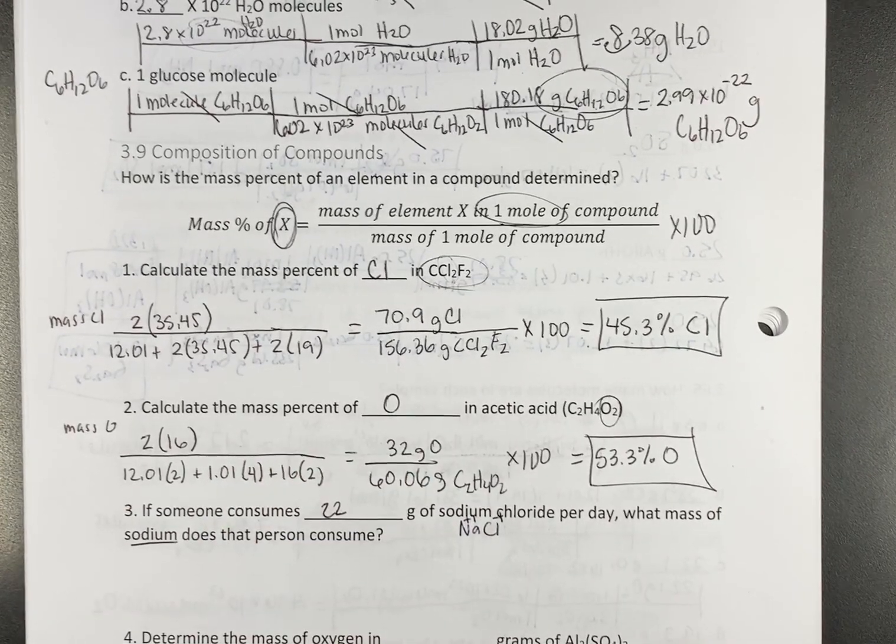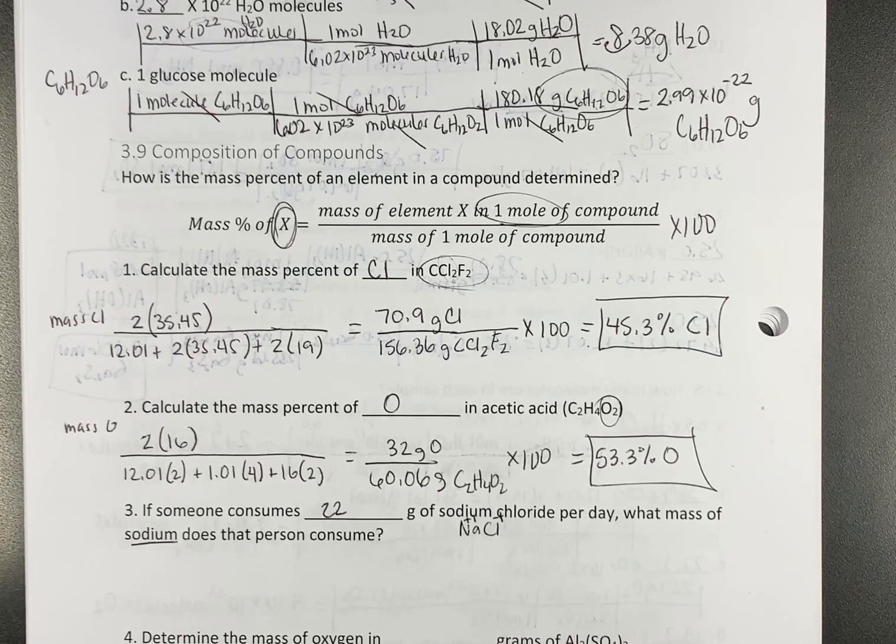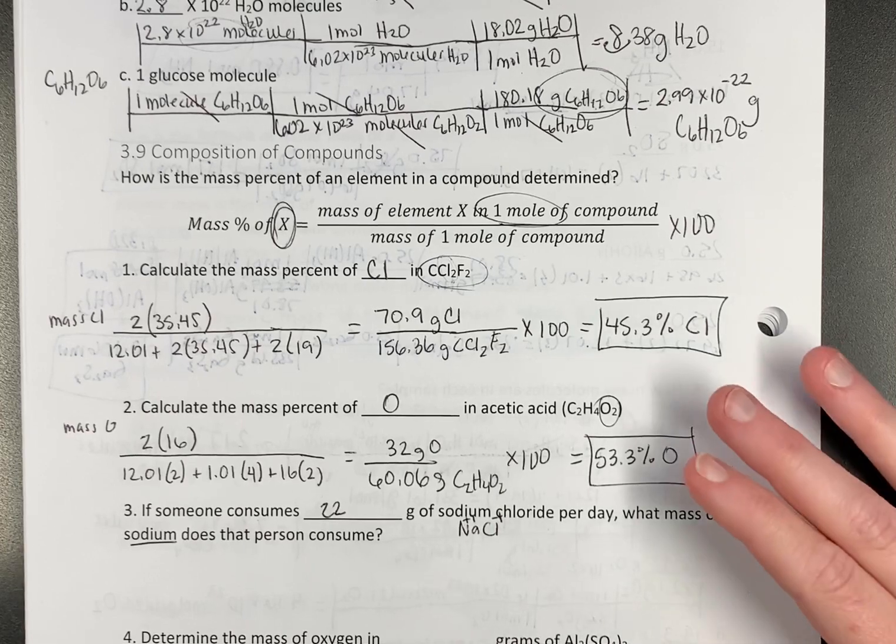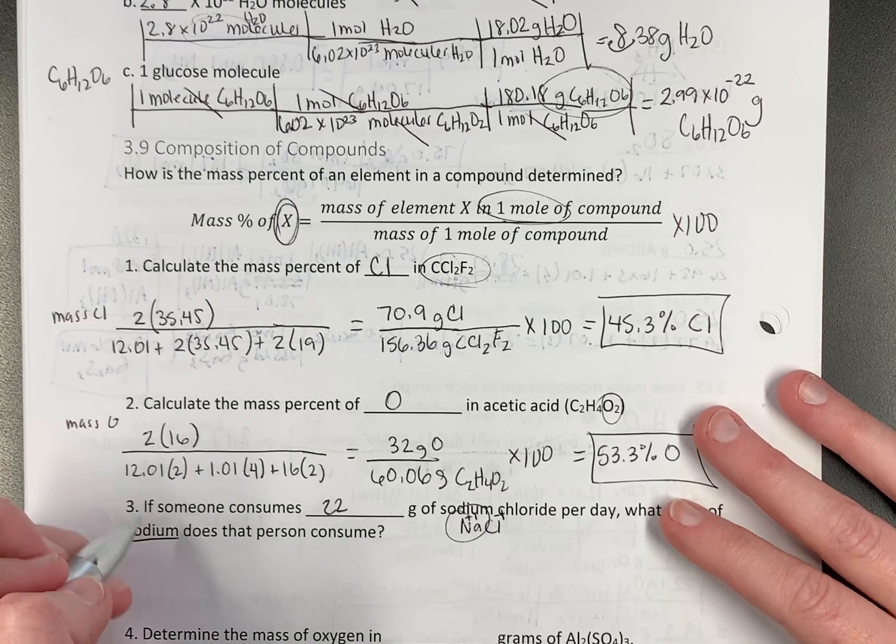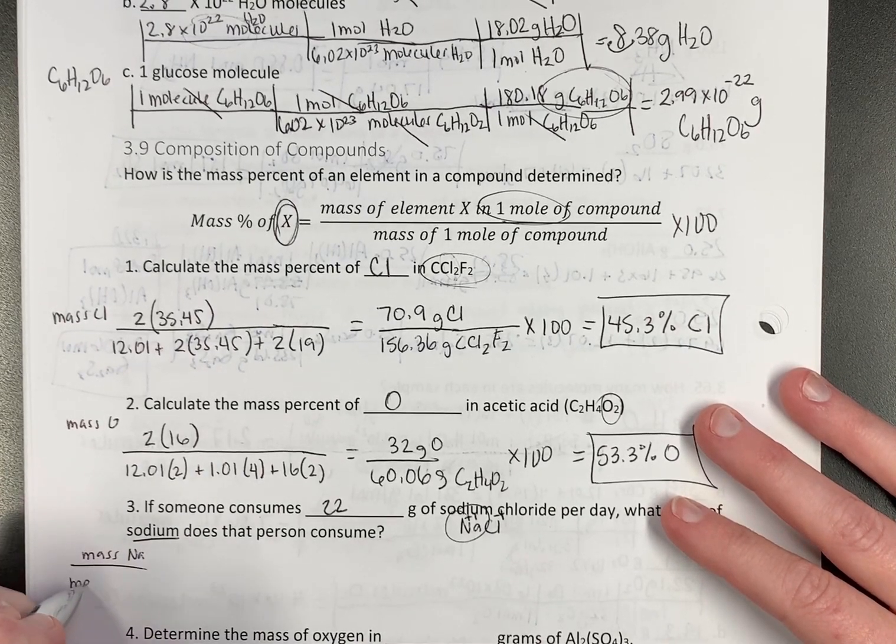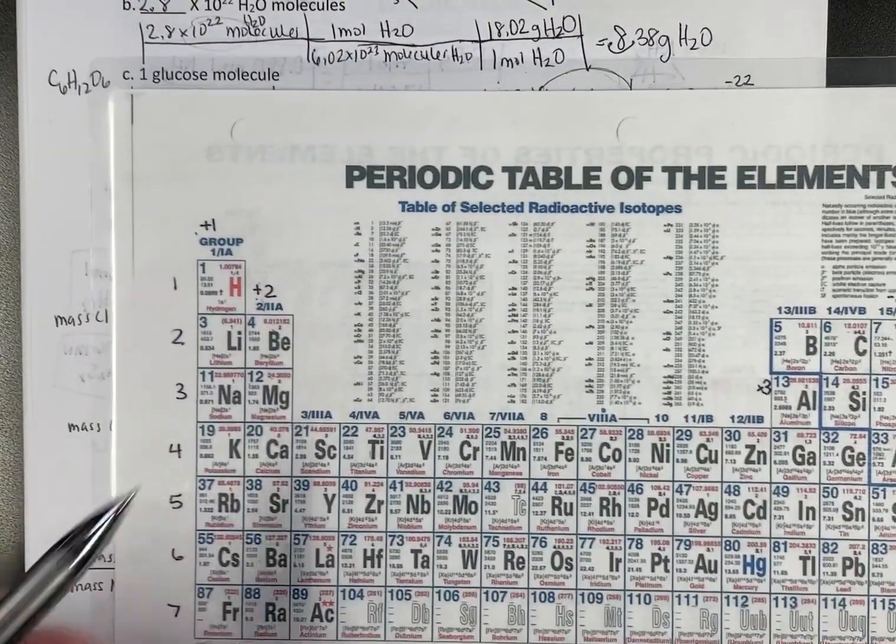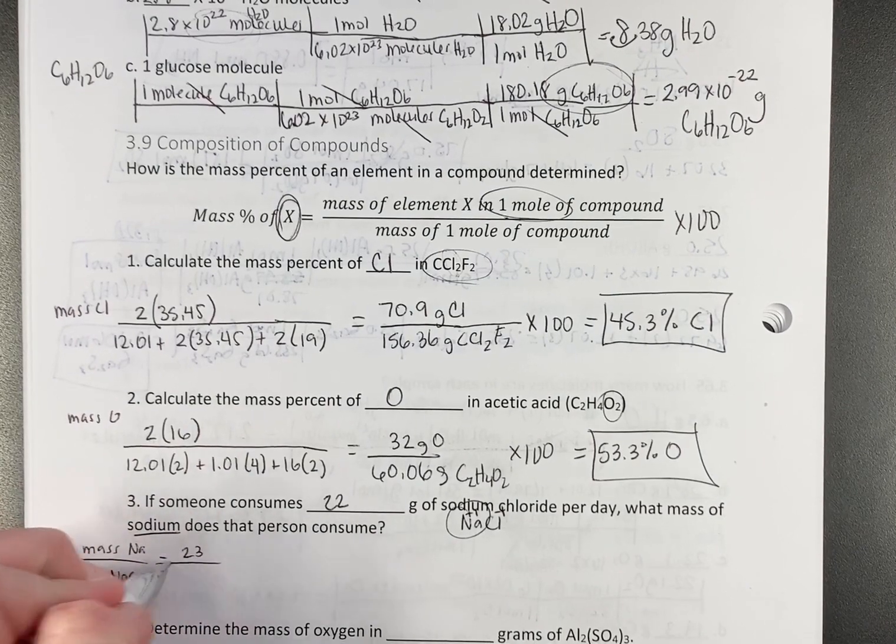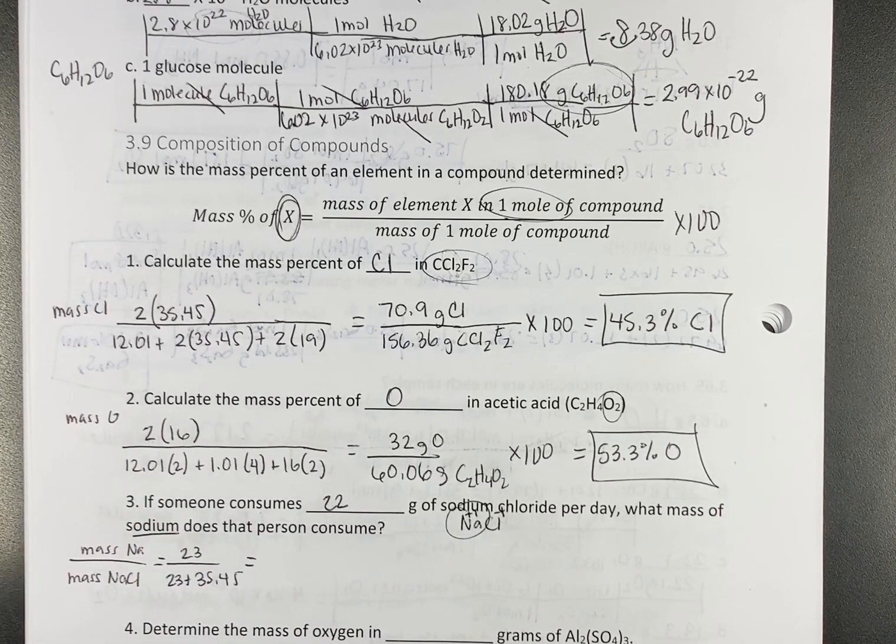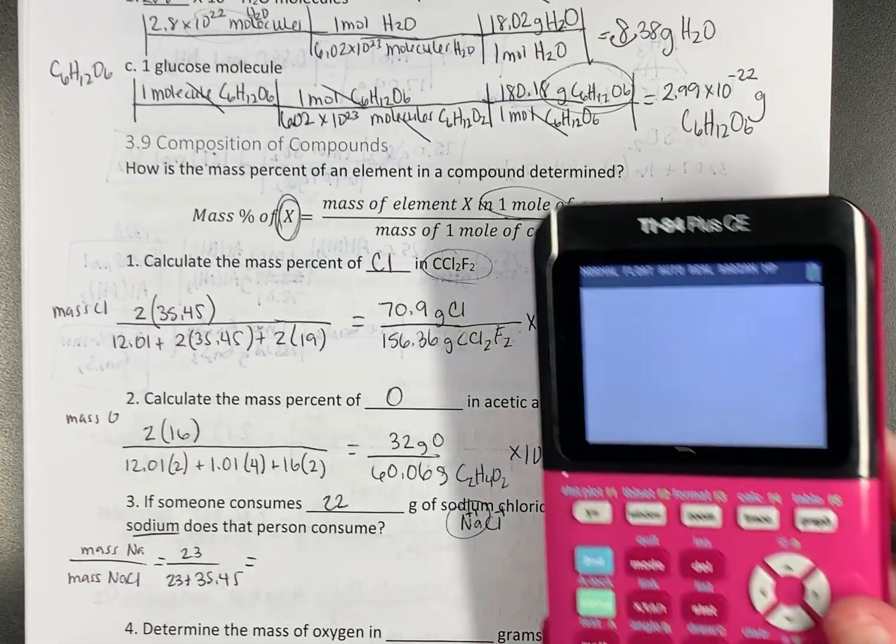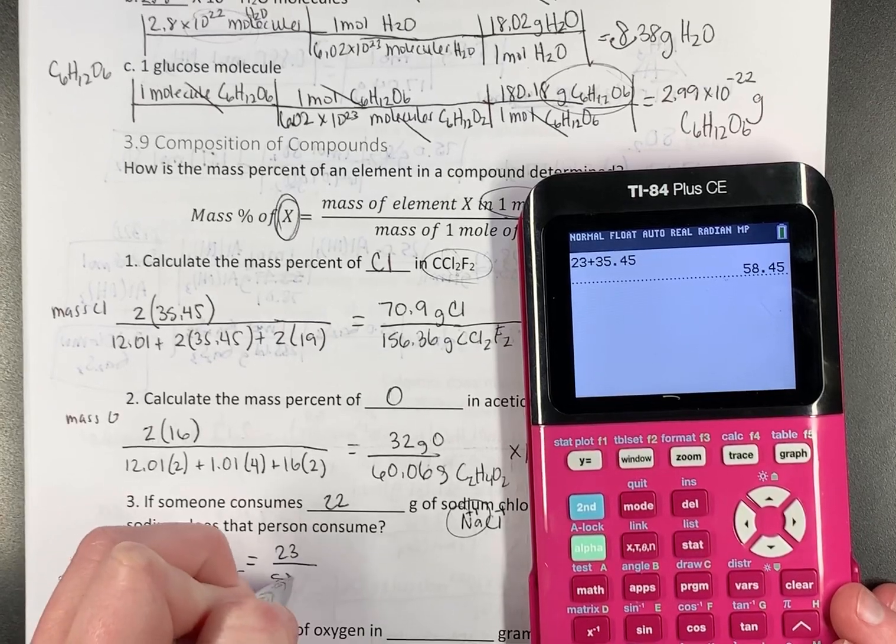Na is plus one, Cl is minus one, so we are charge balanced. This is going to be a proportion, so you can solve it as a proportion. I generally don't do it that way, but you can. So the first thing I want to do is I want to figure out, well, how much sodium is in one molecule? What is our mass percent here? So I'm going to say mass of sodium over the mass of sodium chloride. So sodium is 23, there's only one of them, over 23 plus 35.45.